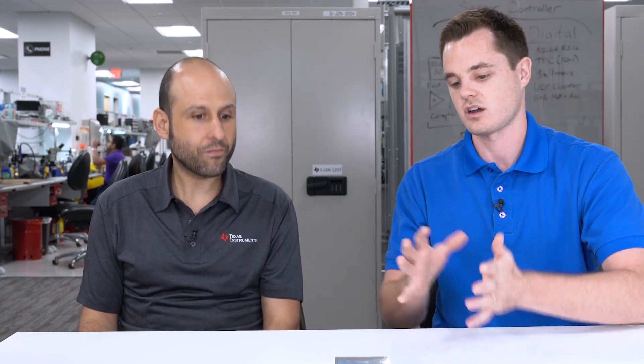And so this demo that you've created, it's based off SimpleLink hardware and software and it demonstrates kind of an e-lock system based on BLE. That's correct. All right. Yeah, so can you give us a little look at what this demo is made up of, maybe a block diagram of what these components are? Sure, sure.